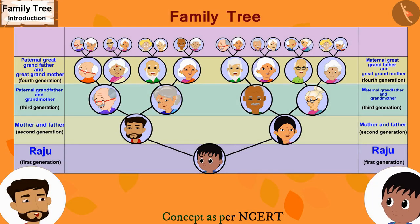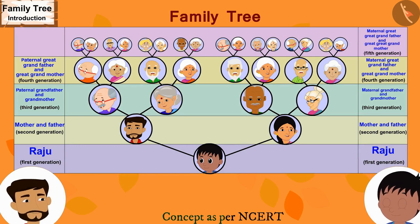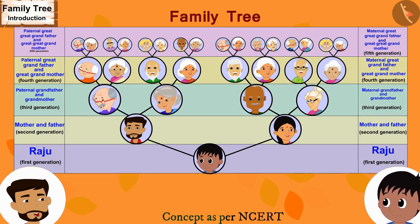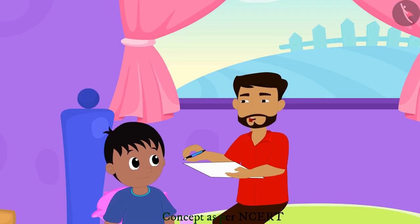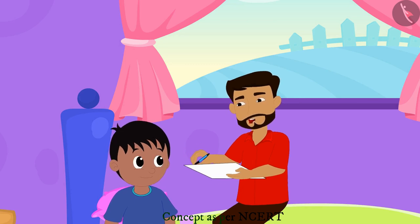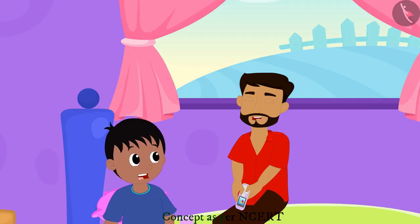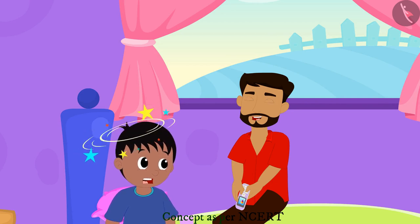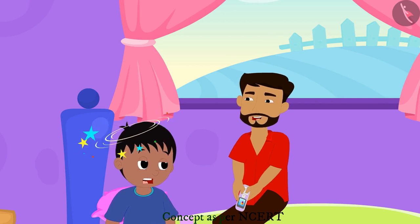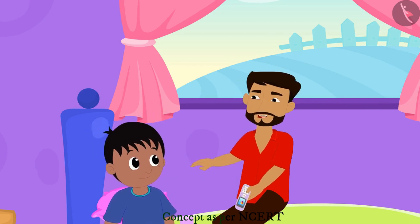Raju asks what he should call all of them. His father explains these are his maternal great great grandfather and great great grandmother, and his paternal great great grandfather and great great grandmother. With this, the family tree is now finally complete. His father jokes that Raju should quickly help call all of them, causing Raju's head to spin at the thought.